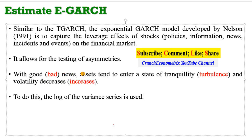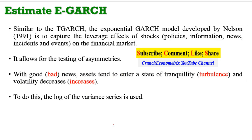But when bad news hits the market, assets enter a state of turbulence and volatility increases. Unlike the T-GARCH model, the EGARCH uses the log of the variance of the series as the dependent variable, and not the level of the conditional variance.